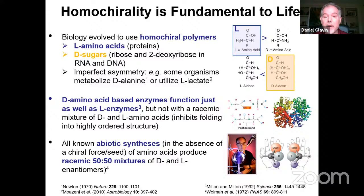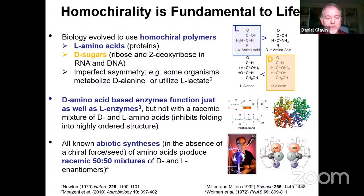Biology evolved to use homochiral polymers — left-handed amino acids in proteins and enzymes, as well as right-handed or D sugars, ribose and deoxyribose, specifically in RNA and DNA. The chiral asymmetry is imperfect; there are peptides that contain both left and right-handed amino acids, and organisms that can utilize L sugars, but overall there's a predominance of left-handed amino acids and right-handed sugars in life. Interesting work about 30 years ago from Milton and Milton showed that synthetic D-amino acid-based enzymes function just as well as the left-handed enzymes, so there's really no reason why life has to be left-handed amino acid-based — it could have been the other way around.